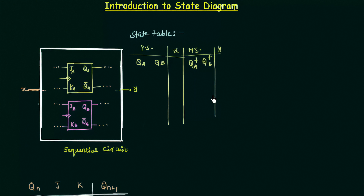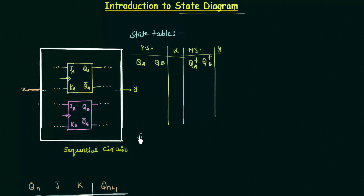By using this state table I can have my state diagram, which is very important. The first step is to know how many states there are, and it can be done by looking at the number of flip flops. There are two flip flops and two outputs Qa and Qb. Therefore I can have 2 to the power 2 equals to 4 states.